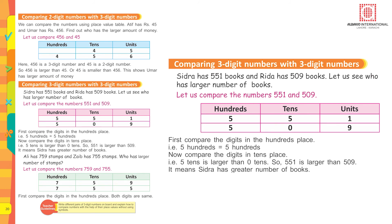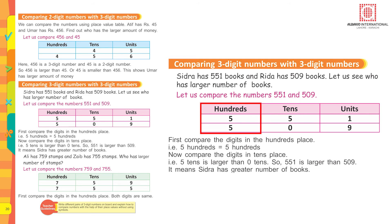Comparing three-digit numbers with three-digit numbers. Sidra has 551 books and Rita has 509 books. Let us compare 551 and 509. First, compare the hundreds place: both have five hundreds, so the digits are the same. Now compare the tens place: there are five tens and zero tens, so 551 is larger than 509.